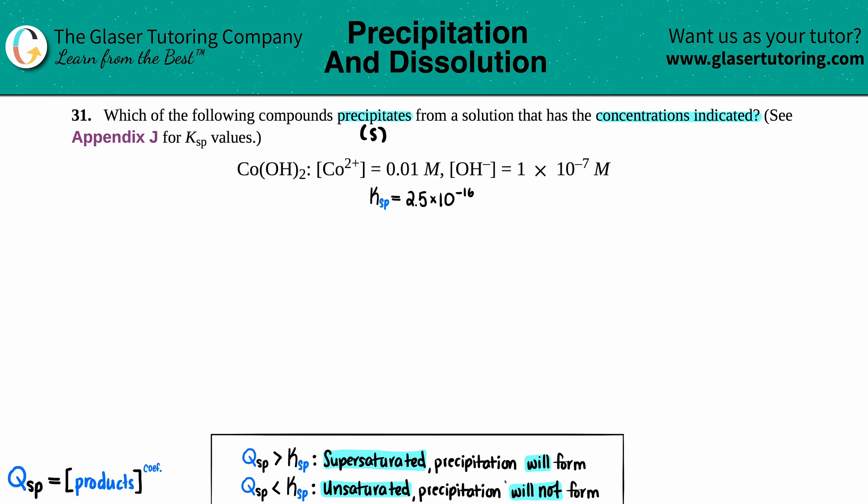But if we didn't reach the limit and our Q value is less than K, that means we're unsaturated and precipitation will not form. You can add more, and depending on how much you add, you would become supersaturated.